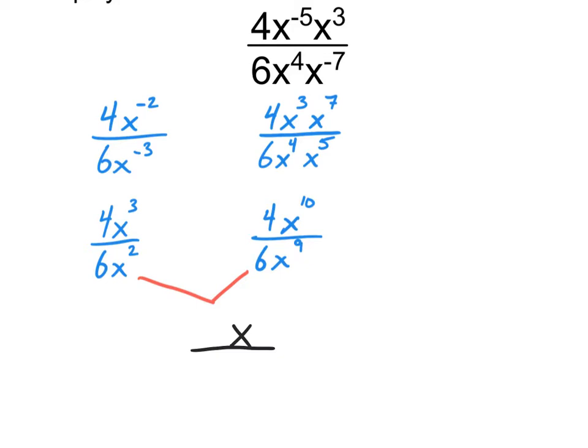Or maybe it wasn't until the end you noticed that 4 over 6 reduces. But at some point you need to notice that 4 over 6 reduces to be 2 thirds. So we would actually get this as our final simplified form, 2x over 3.